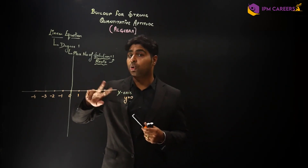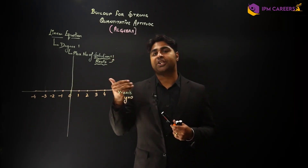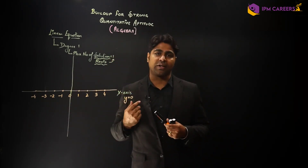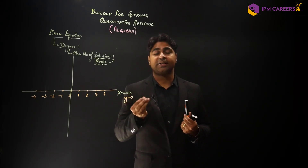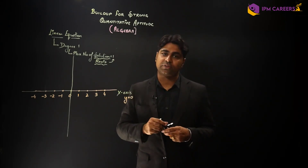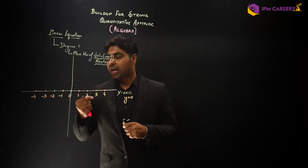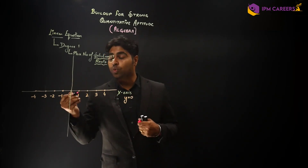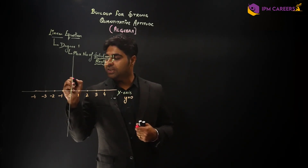So the x-axis equation is: y is equal to 0. When we talk about two dimensions — or if I talk about three dimensions — then the x-axis equation will be y is equal to 0 and z is equal to 0. Here we take the other dimension. So here we go up — values increase: 1, 2, 3, 4.